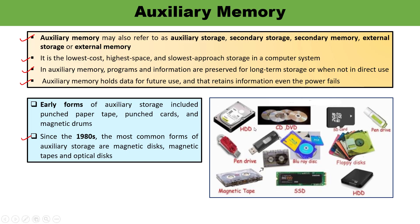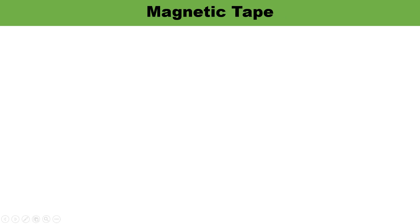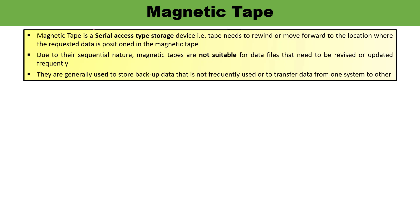In this diagram you can see the various auxiliary memories shown. Now, magnetic tape is a serial access type storage device. Serial access means data can be accessed in a sequential manner. If there is a requirement to access data at a particular location, the tape has to move forward or rewind to that location. That is why it is called a serial access type storage device.